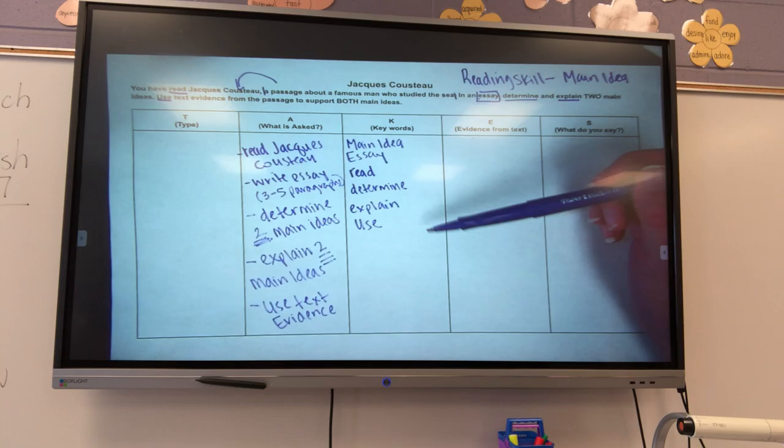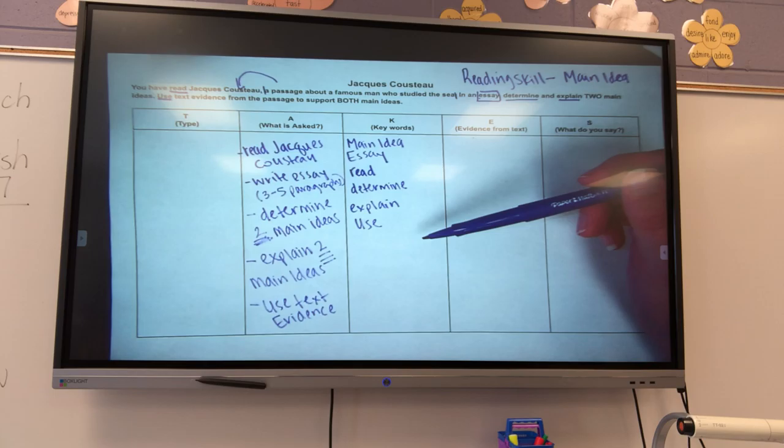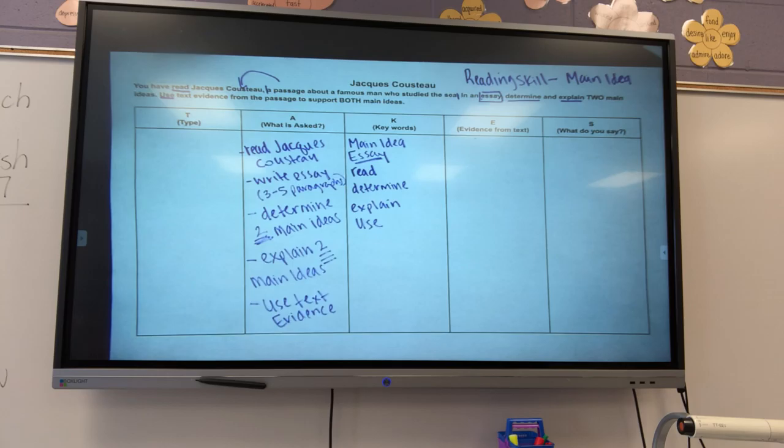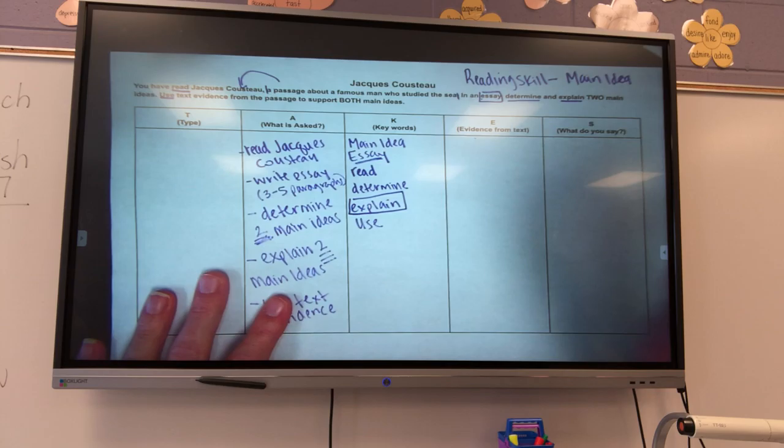So, looking back at my keywords. What is a keyword that tells me what type of writing I need to do? What is my keyword that tells me if I'm going to write a story, or an opinion, or if I'm going to write an informational piece? Zori? Essay. Okay. Essay is a good indicator, but I've got one more that's an even better indicator. Dariana? Not main idea. Maddie?